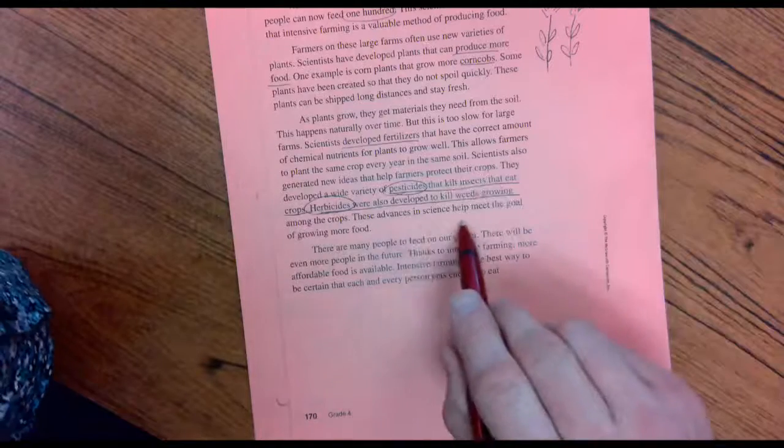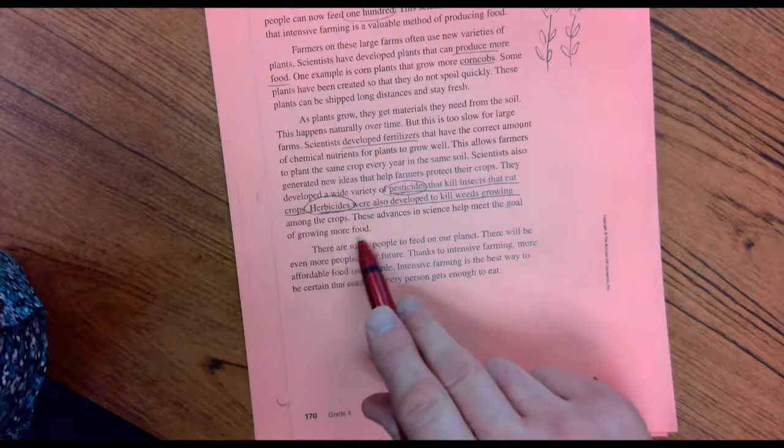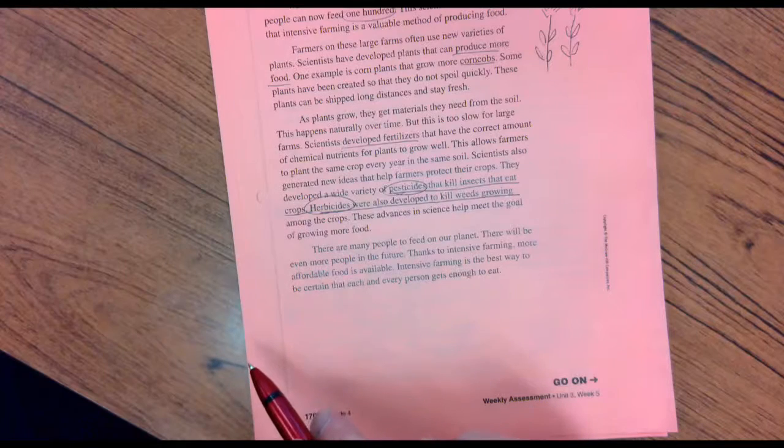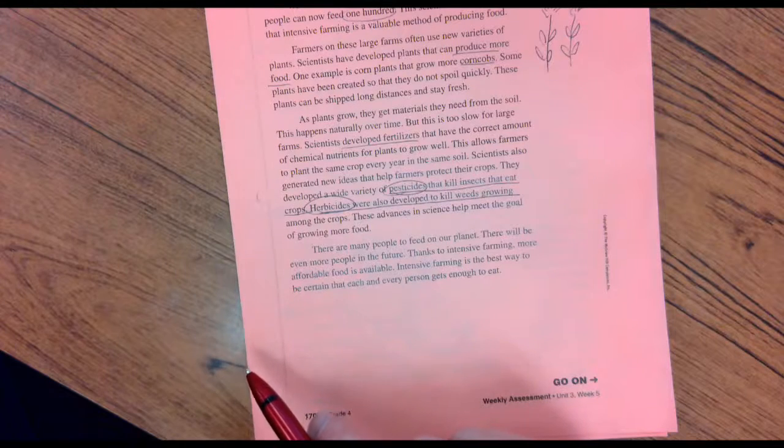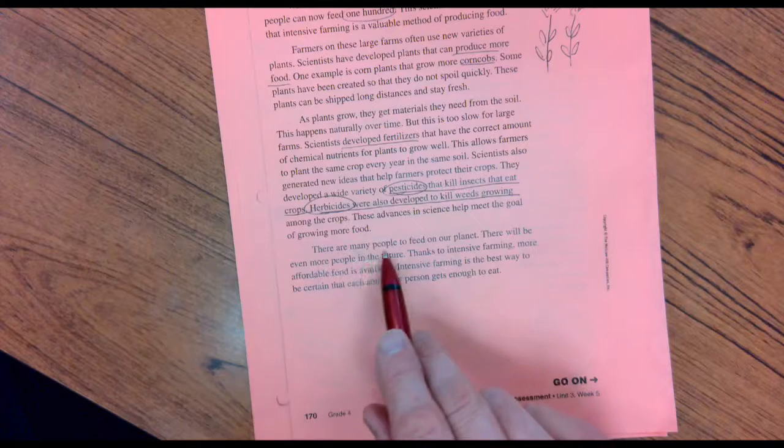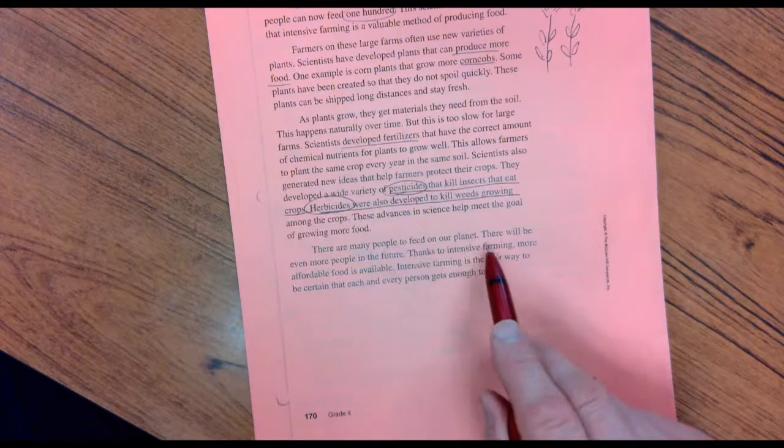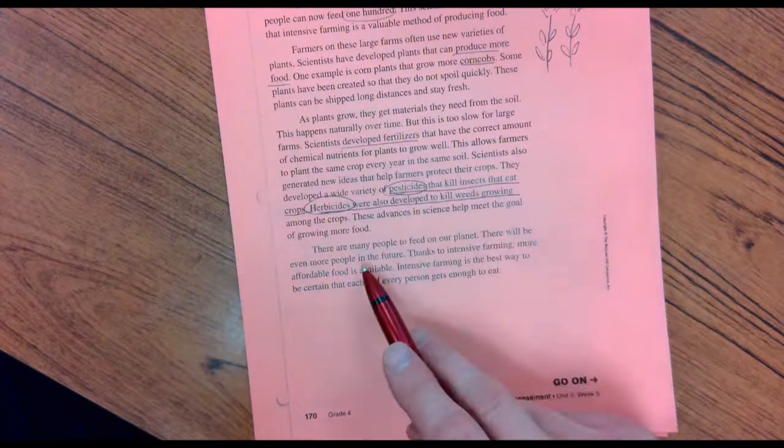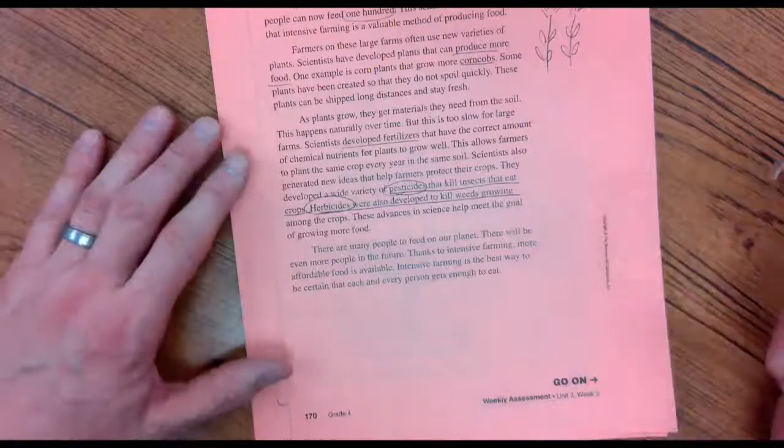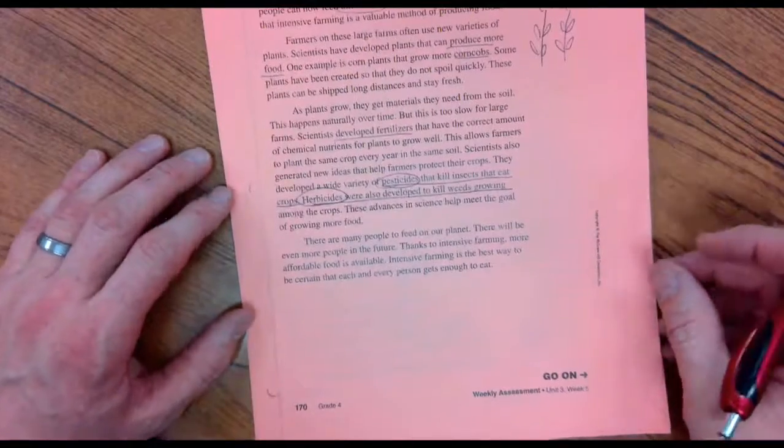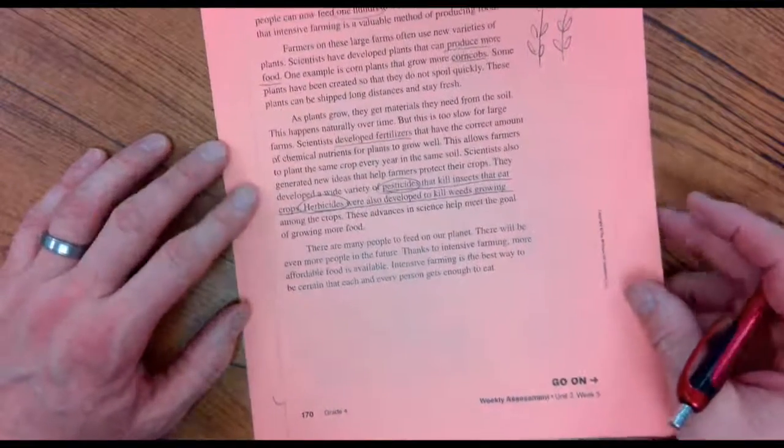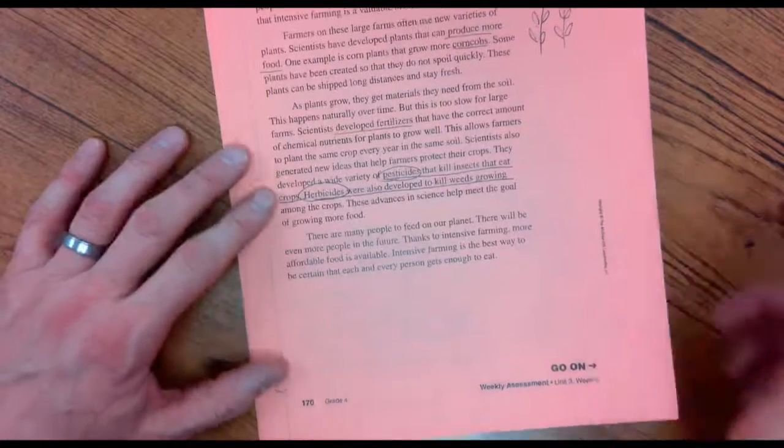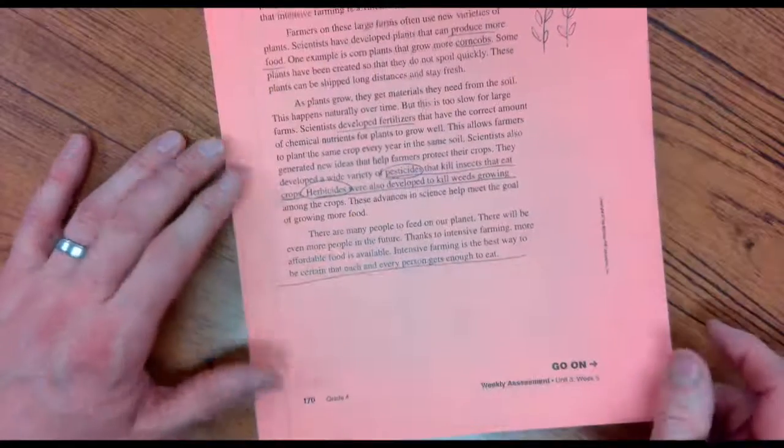These advances in science help meet the goals of growing more food. There are many people to feed on our planet. There will be even more people in the future. Thanks to intensive farming, more affordable food is available. Intensive farming is the best way to be certain that each and every person gets enough to eat.